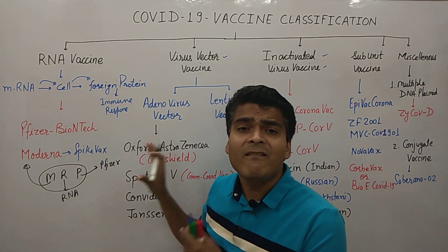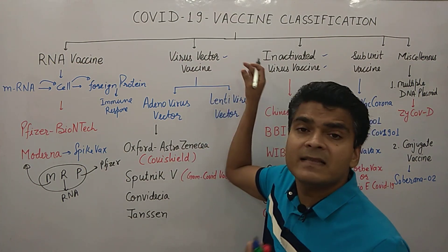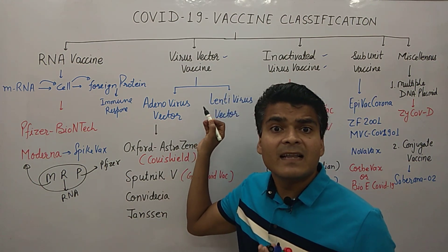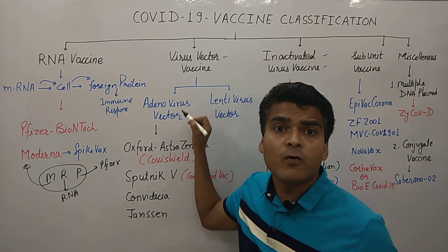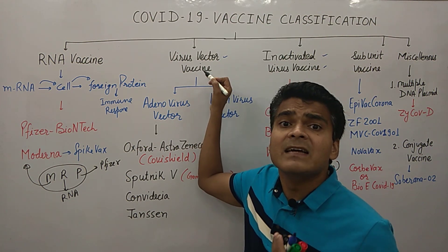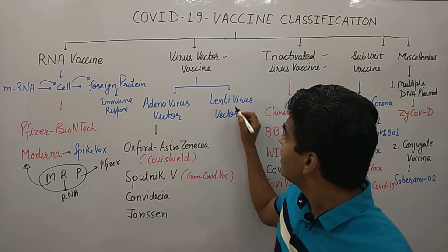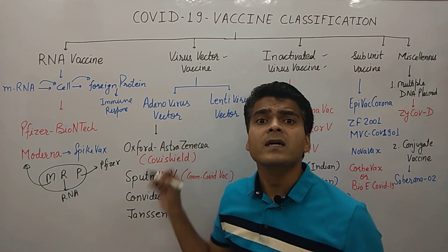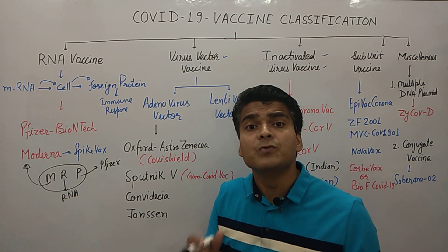Moving on to virus vector vaccines. Scientists take a virus as a shell — particularly an adenovirus shell — and transfer the DNA material of the coronavirus into the human body using that viral vector. There are two types: adenovirus and lentivirus vectors. Lentivirus vector vaccines are currently in development, while adenovirus vaccines are already developed and approved — with full authorization in some countries and emergency use authorization in others.